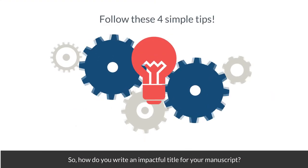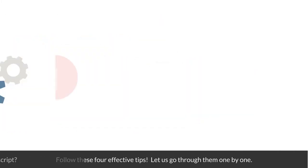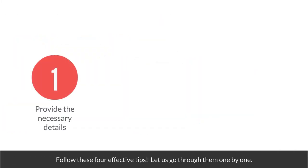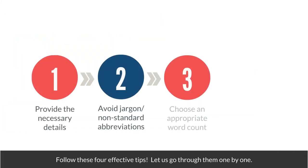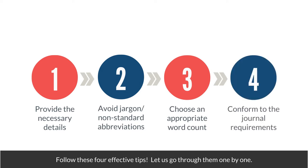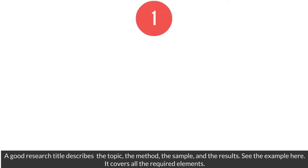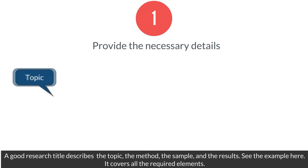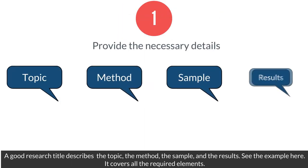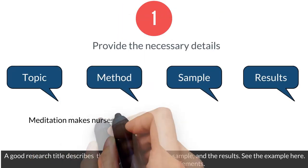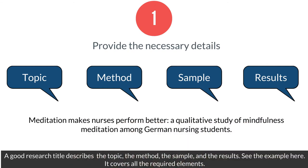So how do you write an impactful title? Follow these four effective tips. A good research title describes the topic, the method, the sample, and the results. See the example here — it covers all the required elements.